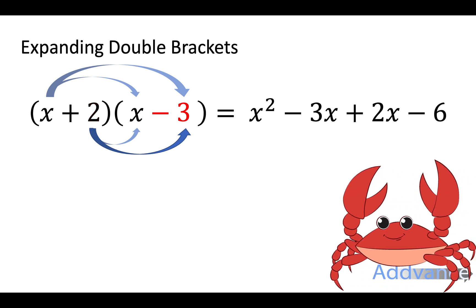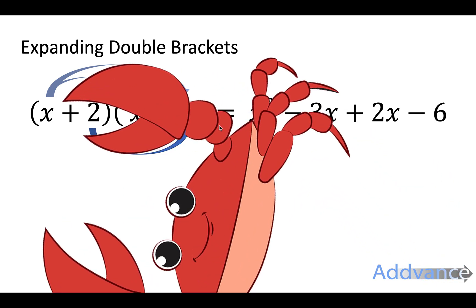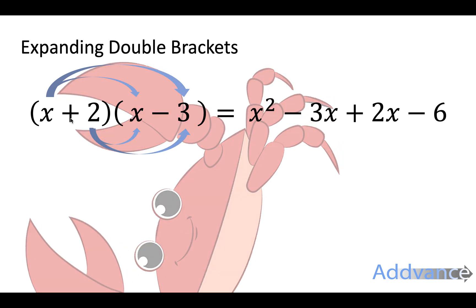Now when I'm doing this I always remember that my arrows look like a crab's claw. So when I multiply everything in the first bracket by multiplying everything in the second bracket it will make a pattern like a crab's claw. And that's something you have to remember.